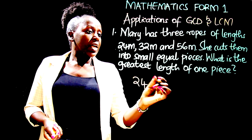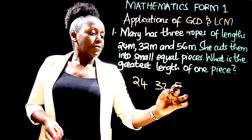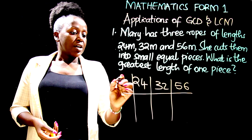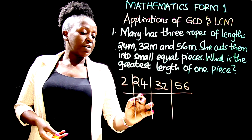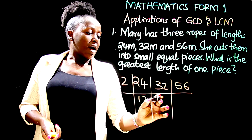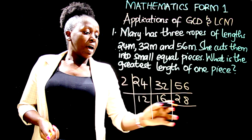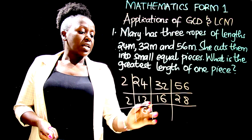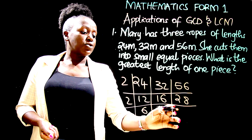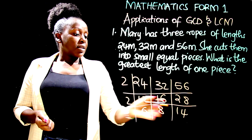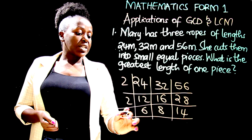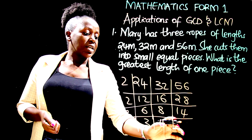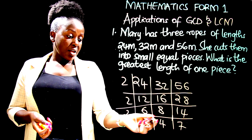So we have 24, then 32, and then 56. Which number can divide 24, 32, and 56? We have 2. 24 divided by 2 is 12. 32 divided by 2 is 16. 56 divided by 2 is 28. Again, which number can divide 12, 16, and 28? We have 2. 12 divided by 2 is 6. 16 divided by 2 is 8. 28 divided by 2 is 14. Do we have another common divisor? Yes. And for 6, 8, and 14 — next divisor is 2 again. That gives us 3, 4, and 7.